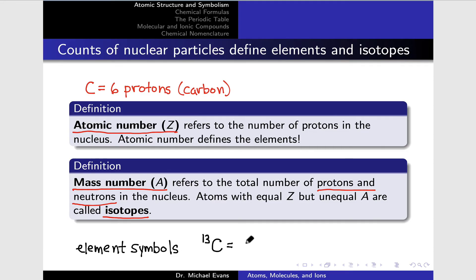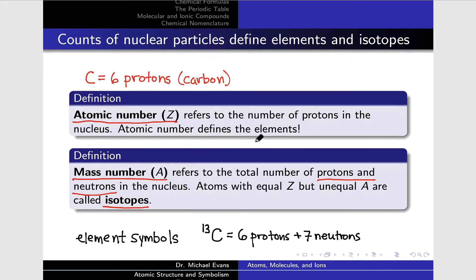From this symbol, we can deduce things about the number of protons and neutrons in the nucleus. Because this is carbon, we have six protons in the nucleus, and the mass number of 13 indicates that we must have seven neutrons in the nucleus. Since the total number of nucleons is 13, we've got six protons, and the balance, or the remainder, is neutrons, so seven neutrons. The element symbol allows us to get a rich picture of the nucleus and understand distinctions between isotopes as well.